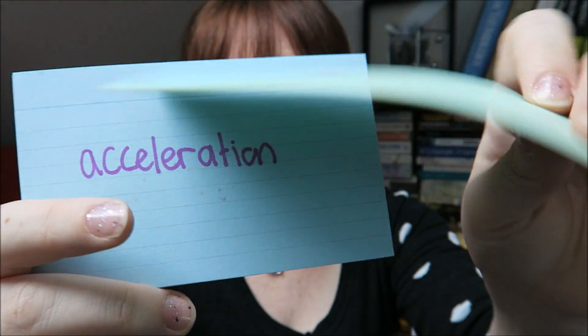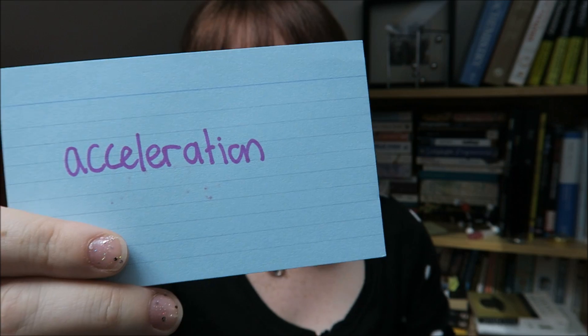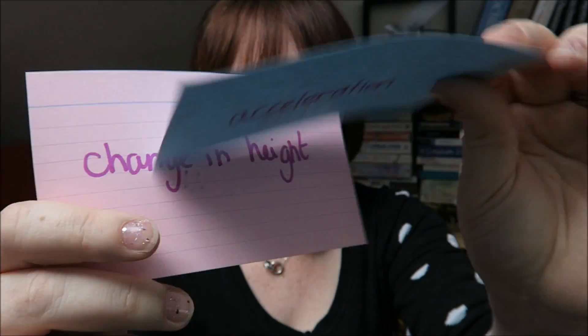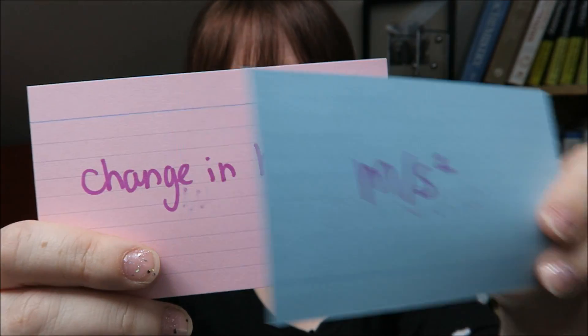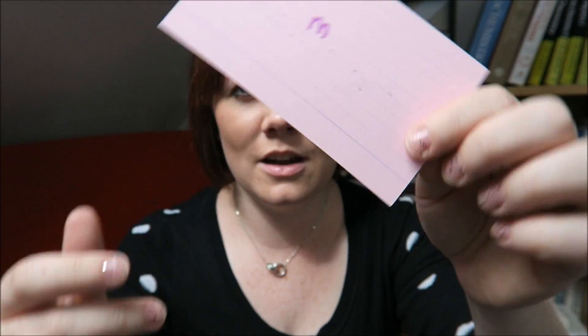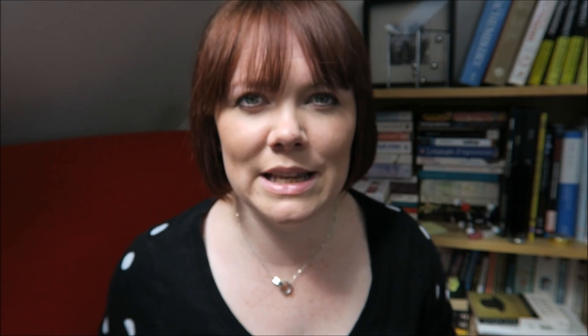Change in gravitational potential energy? Joules. Acceleration? Meters per second squared. And change in height? Meters. You should be able to do it that quickly. If you got them all right, well done. If you didn't get them all right, watch the video again until you do, because it is so, so important that you know your units.